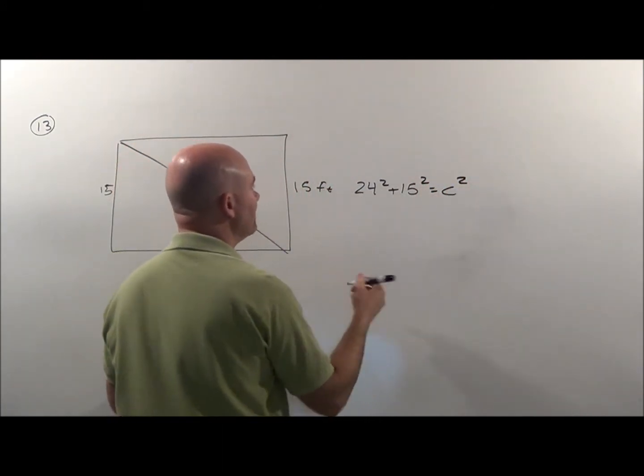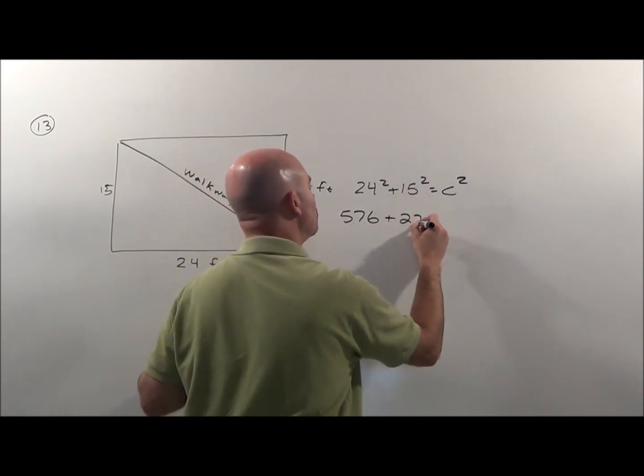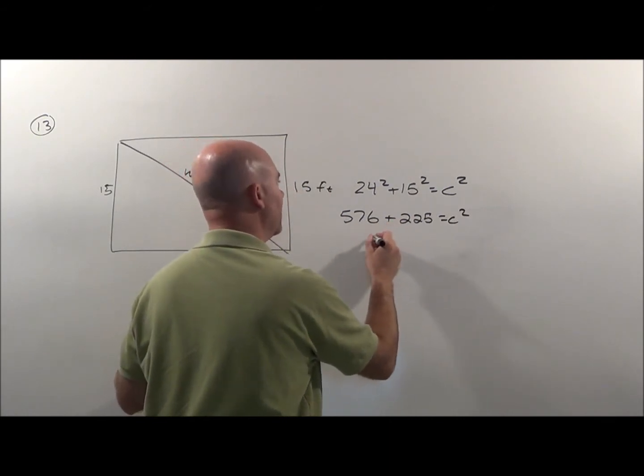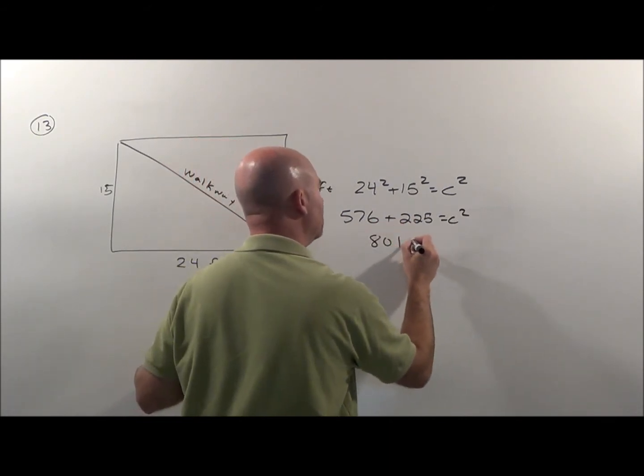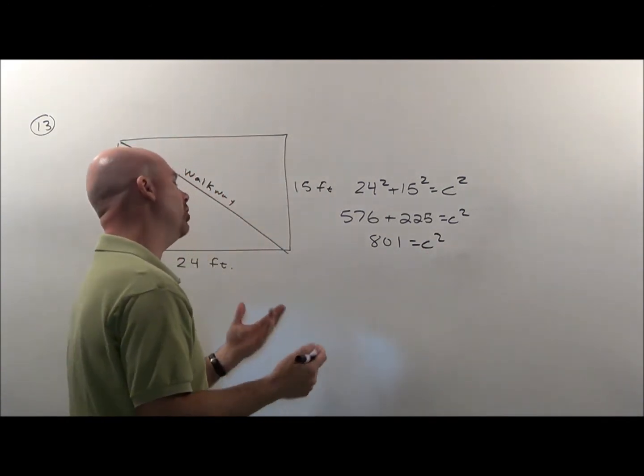Now 24 times 24 is 576, 15 times 15 is 225, that's 801 total. What number squared is 801?